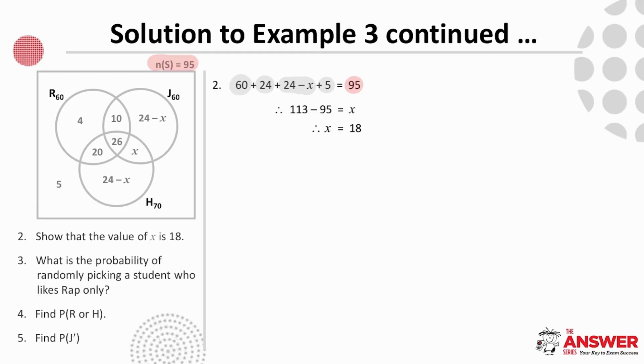You may notice the totals for each area of music have been included as subscripts. And this is just a helpful way to carry over the information. Then for number three, the number of students who like Rap only is four. And so the probability of randomly picking a student who likes Rap only is 4 over 95.